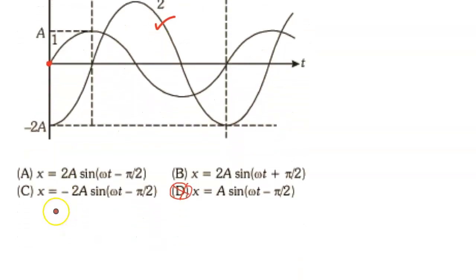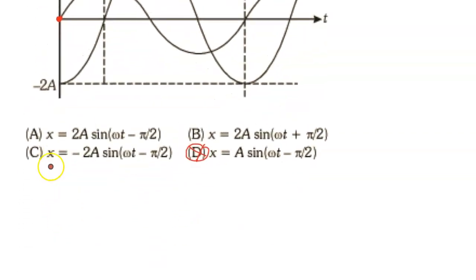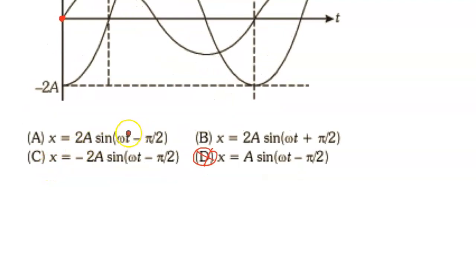When you put t = 0 in this equation, this will become 0, and you will get 2A sin(-π/2). And sin(-π/2) is -1. So this is correct. A is correct.